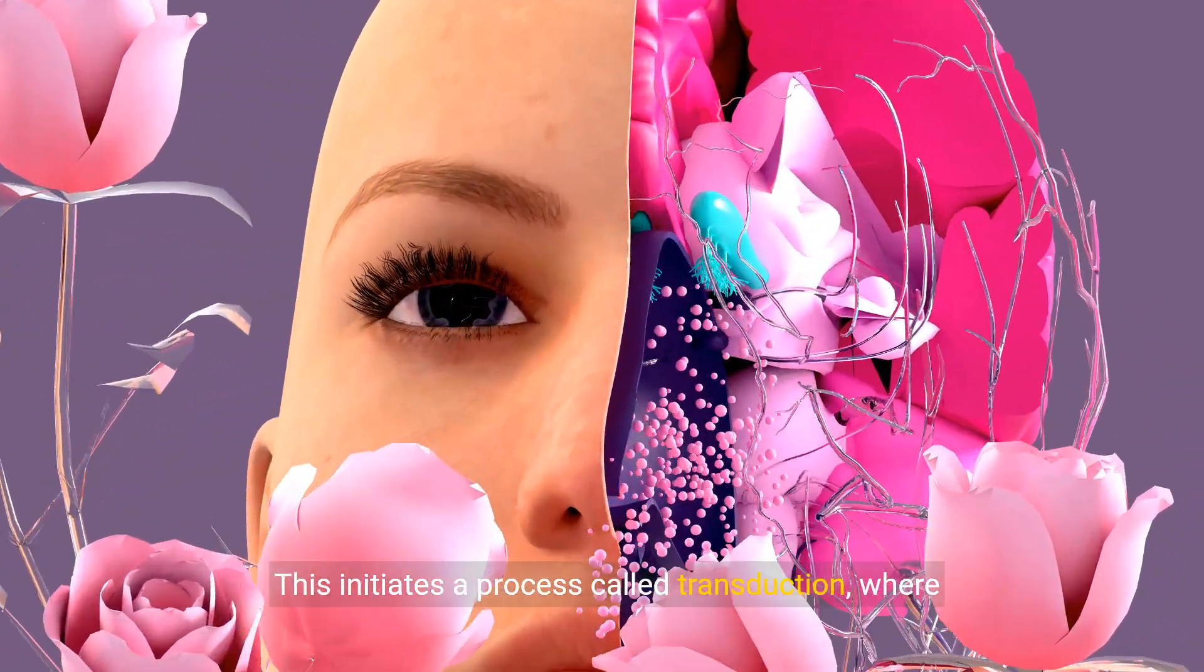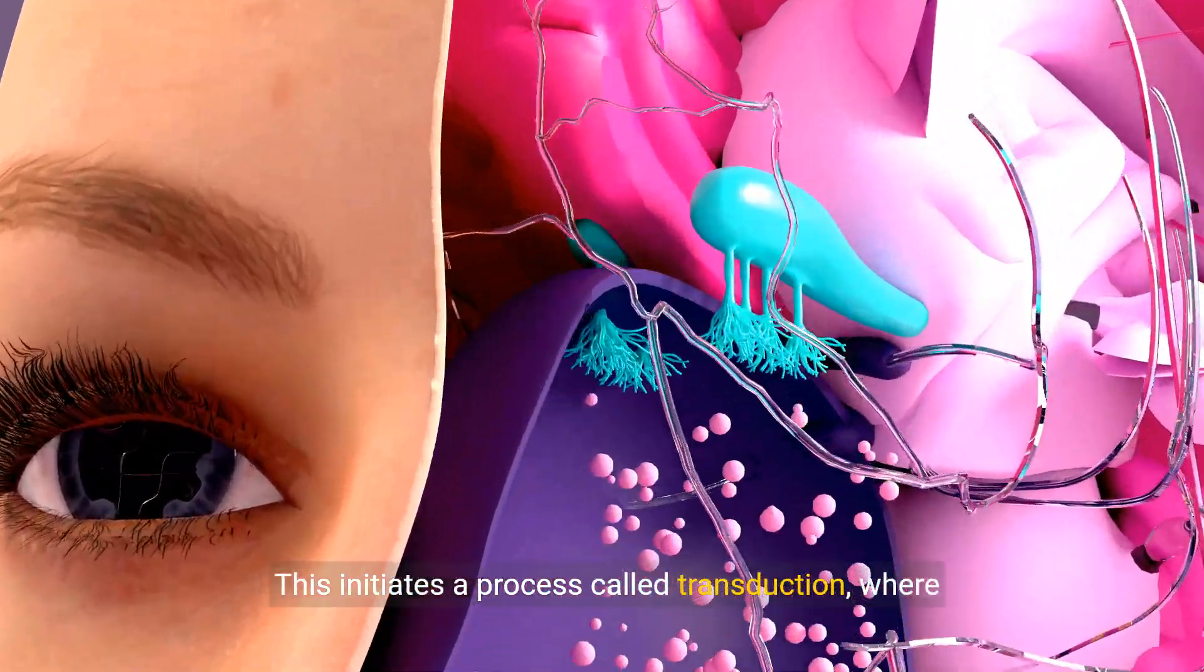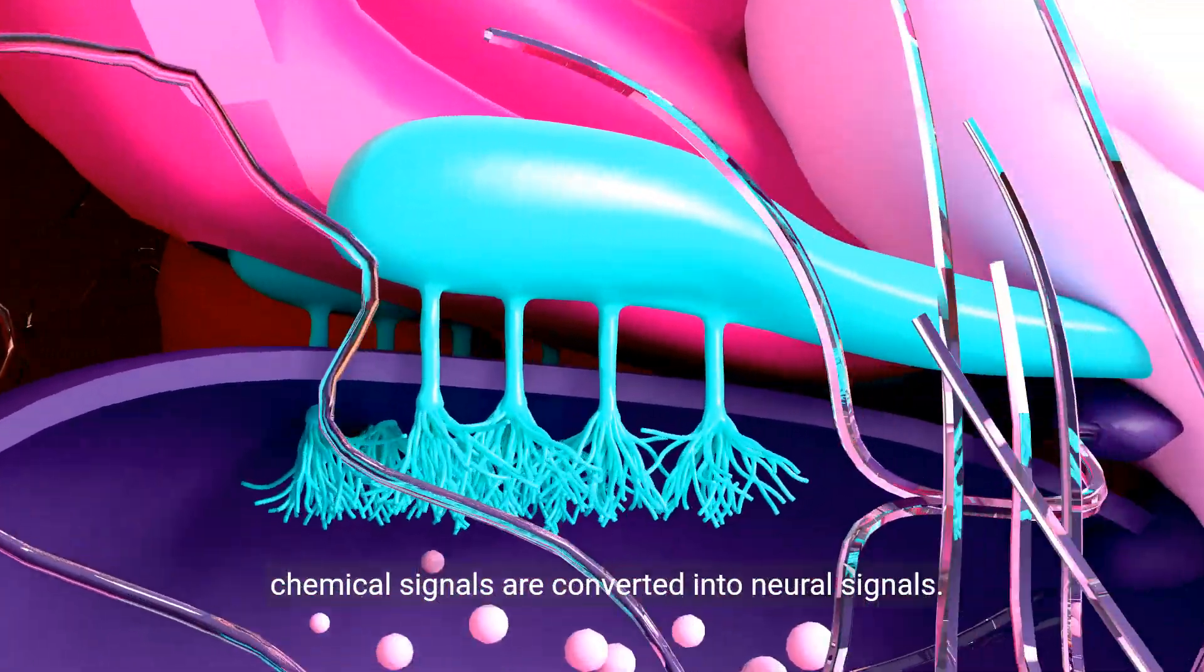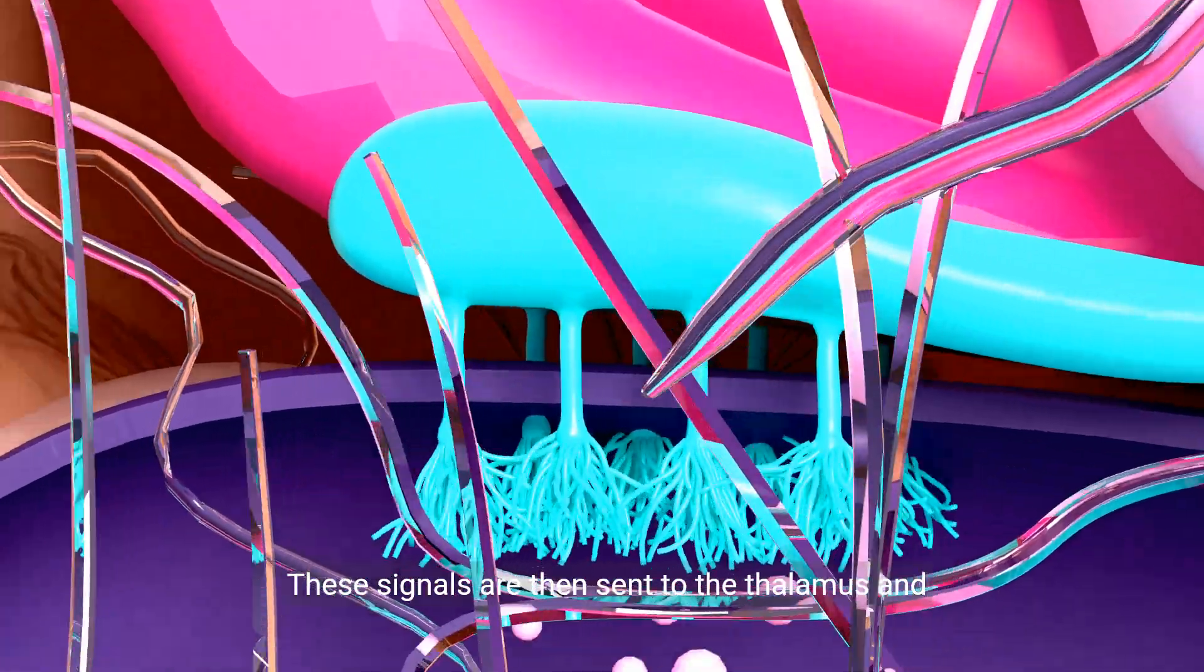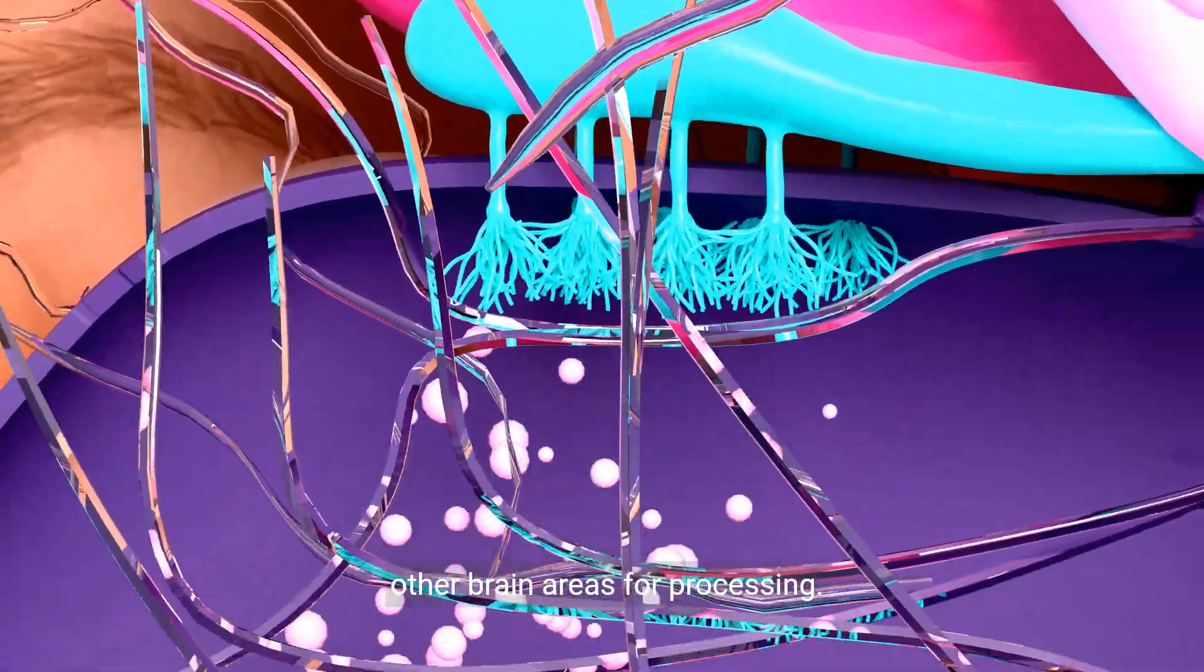This initiates a process called transduction, where chemical signals are converted into neural signals. These signals are then sent to the thalamus and other brain areas for processing.